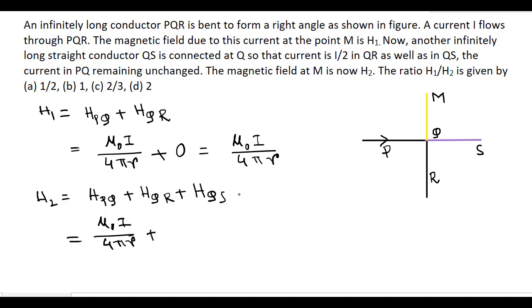And the current now in the branch QR is I by 2, but again the magnetic field due to QR is 0. And the magnetic field at M due to QS of current I by 2 is mu 0 I by 2 divided by 4 pi R. Now this is equal to mu 0 I divided by 4 pi R.